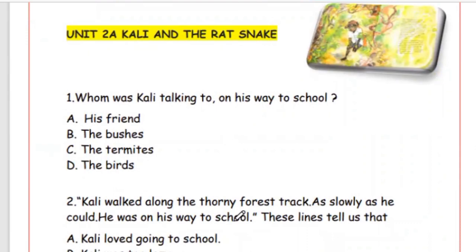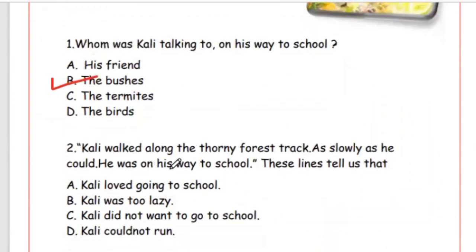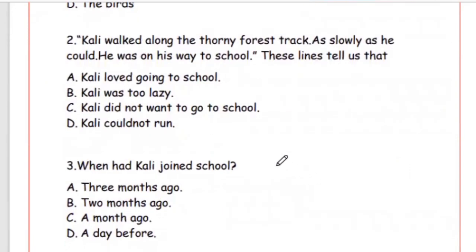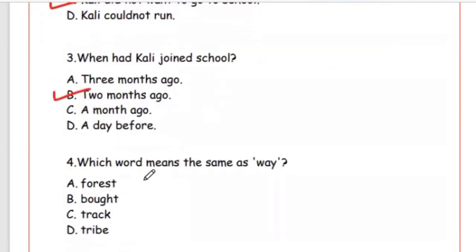Now Unit 2A: Kali and the Rat Snake. Question 1: Whom was Kali talking to on his way to school? Options: his friend, the bushes, the termites, the birds. The right answer is the bushes. Question 2: 'Kali walked along the thorny floor, his track as slowly as he could. He was on his way to school.' These lines tell us — Option C is the right answer — Kali did not want to go to school. Question 3: When had Kali joined school? Option B, two months ago.